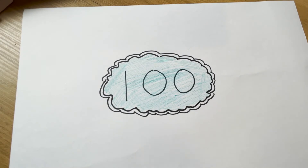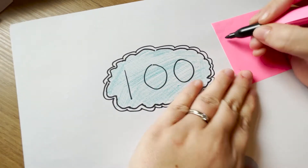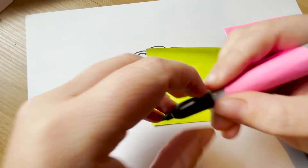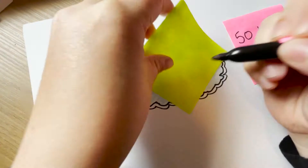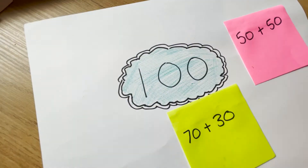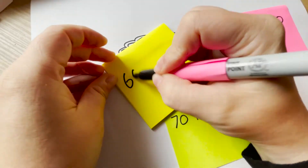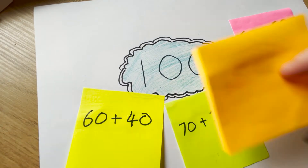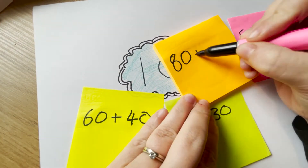The first activity I want to show you is really simple. Write 100 in the middle of the paper and ask your children to come up with different ways to make 100 using any previous number bond knowledge.